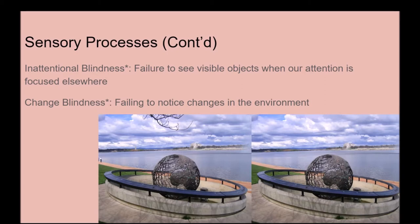When talking about sensory processes, we also want to talk about different types of blindness. Inattentional blindness is a failure to see visible objects when our attention is focused elsewhere. Change blindness is failing to notice changes in the environment — for example, in the picture shown, the left photo has tree branches and people, while the right photo does not, but if flashed quickly you might not notice the difference. Inattentional blindness is like a psychological experiment where someone has you sign a waiver, and while your attention is on the paper, they put on a wig — you don't notice because your attention was focused elsewhere.